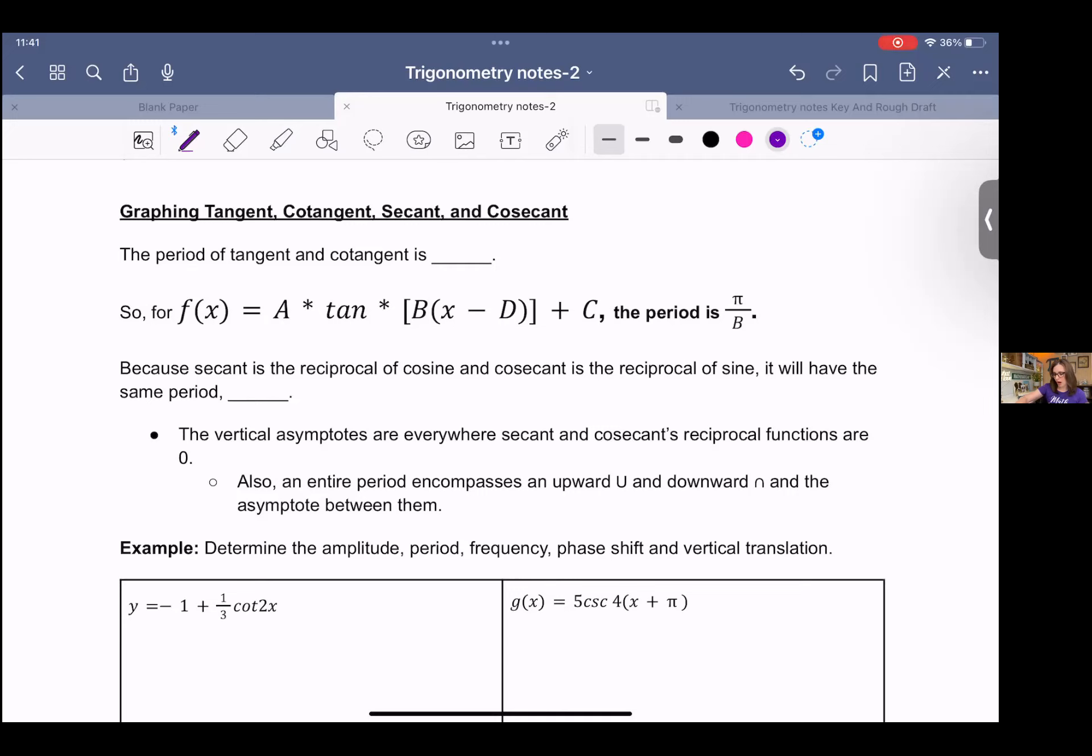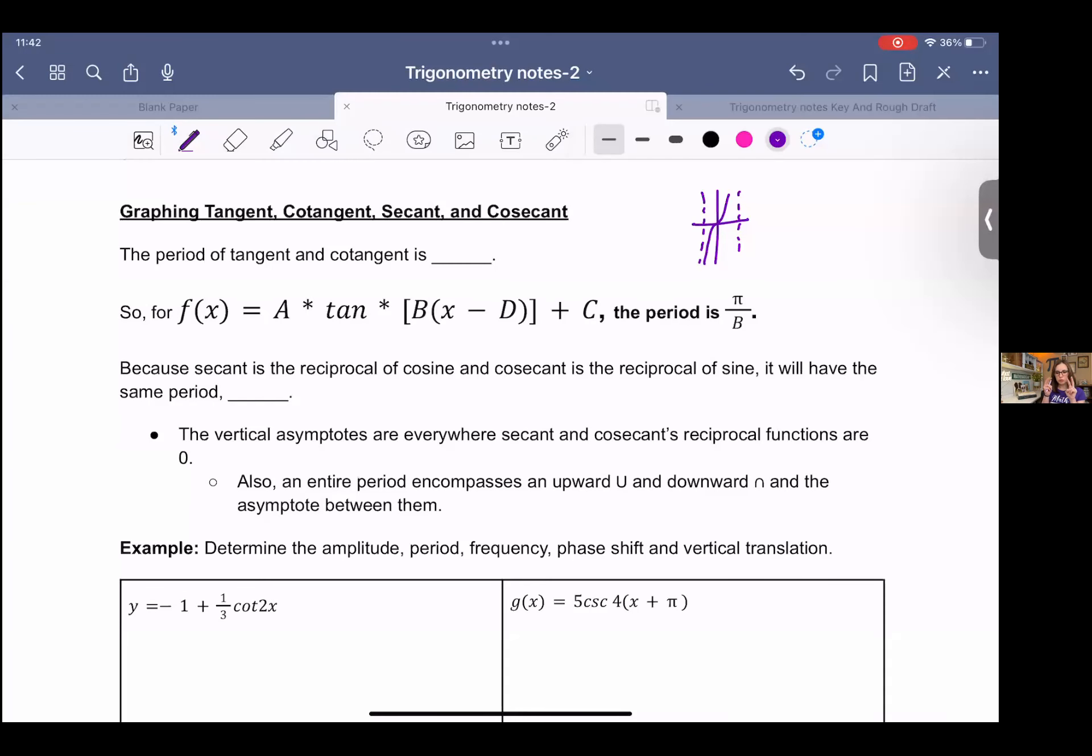So if you can envision that graph, we have asymptotes at negative pi over 2 and pi over 2, and then we have this nice graph in between. So we have one full wave in a span of pi, and cotangent has different asymptotes but the same length of the wave, so the period for tangent and cotangent is pi.